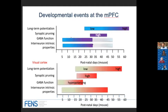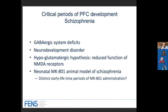This data fills the gap on how GABAergic receptor function and interneuron intrinsic properties develop in the prefrontal cortex — showing that the reversal potential and interneuron maturation are significantly delayed compared to primary sensory areas. GABAergic function is significantly affected in neurodevelopmental disorders such as schizophrenia, and perturbations of early-life GABAergic function could contribute to the emergence of symptoms. Inhibition of NMDA receptors has also been linked to schizophrenia, resulting in the development of the neonatal MK801 animal model.